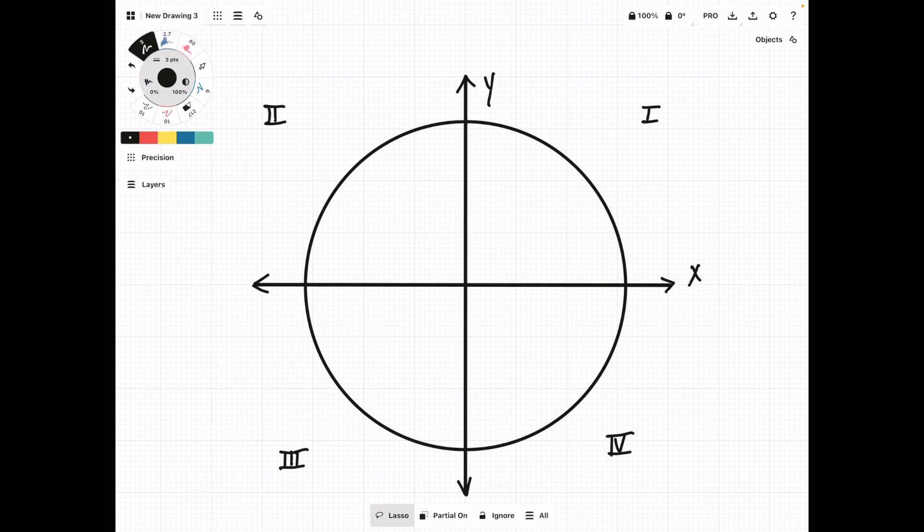The quadrants are useful because they tell us what the signage is of x and y. So in quadrant 1, we have a positive x and a positive y.